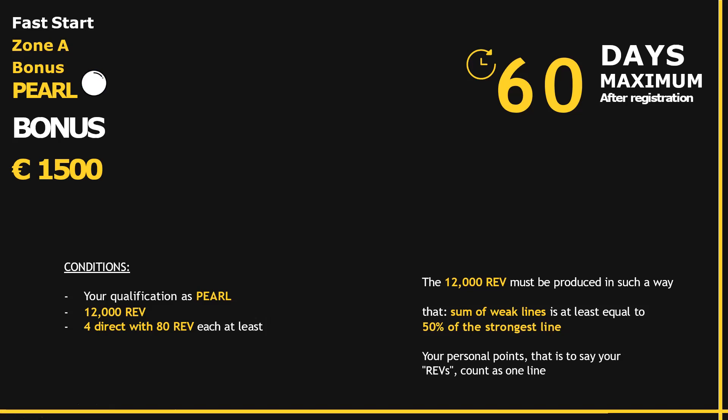What does that mean? Let's say one of your lines has 10,000 REV and all the other lines are just 100 each, and you only have five other lines. You'll see that if you add up all the REVs for the other lines, they don't fulfill this rule because they are less than 50% of the 10,000 REVs on the strongest line. So you want to make sure your lines are balanced to the point that the sum of all the weak lines is at least equal to 50% of the strongest line.